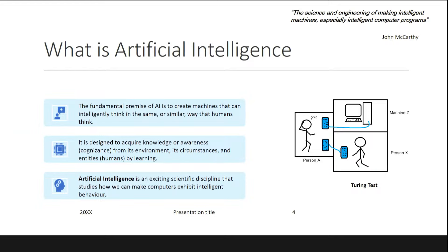The question becomes: how do we say that a machine is intelligent? Alan Turing devised a test called the Turing test, taken as a benchmark for deciding whether a machine is intelligent. In this test, a person interacts with someone in the background but doesn't know whether he is interacting with a machine or a human being. If the person cannot infer that he is interacting with a machine, we say the machine has passed the Turing test of intelligence.